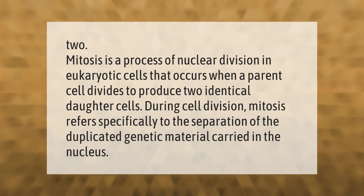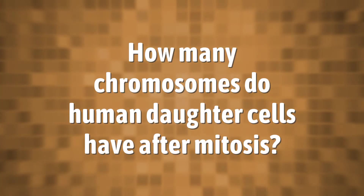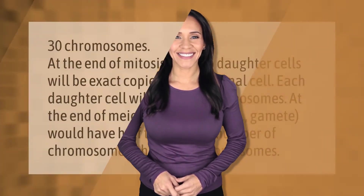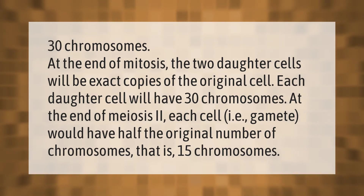At the end of mitosis, the two daughter cells will have 30 chromosomes each. The two daughter cells are exact copies of the original parent cell.